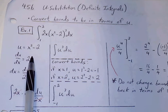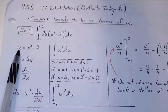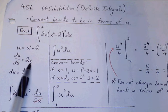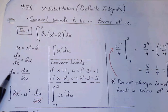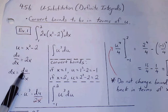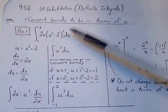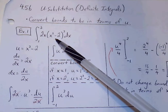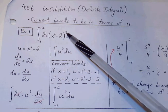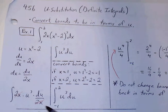So u is x squared minus 2. We find the derivative, so d over dx is simply 2x. Cross multiply, dx will be du over 2x. So now we make our substitutions. 2x remains.